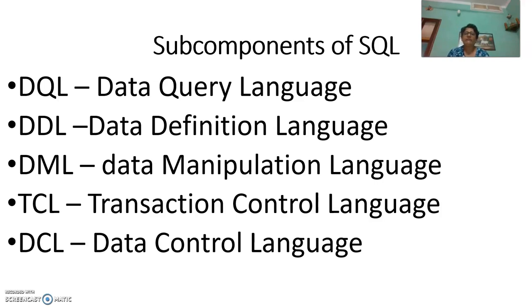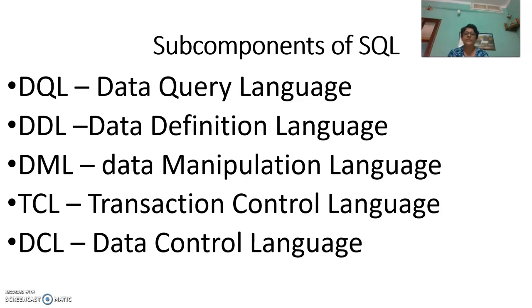When we want to create a table, drop a table, or make changes to a table, that comes under DDL. For example, an order table has order number, order date, and quantity — that is a table with columns and rows, where rows are records and columns are the vertical fields. DML is used when we want to insert data, such as order number 1, order date as today's date, and order quantity as 10 — that is a record entered using DML.